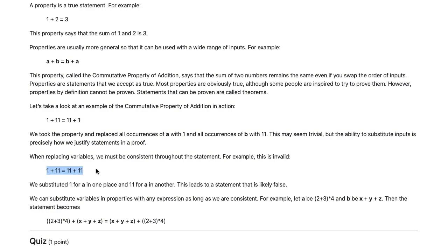We can substitute variables in properties with any expression as long as we are consistent. For example, let a be 2 plus 3 times 4 and b be x plus y plus z. Then the statement becomes 2 plus 3 times 4 plus x plus y plus z equals x plus y plus z plus 2 plus 3 times 4.